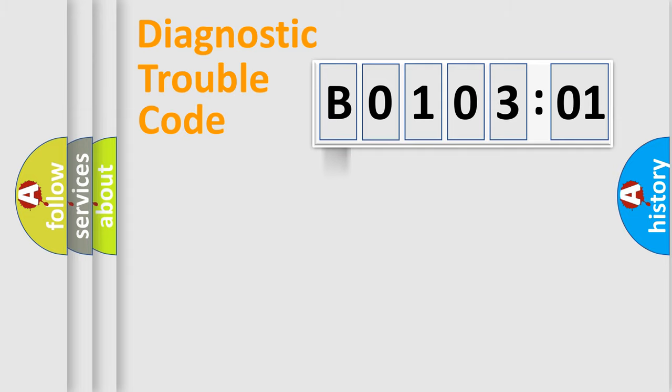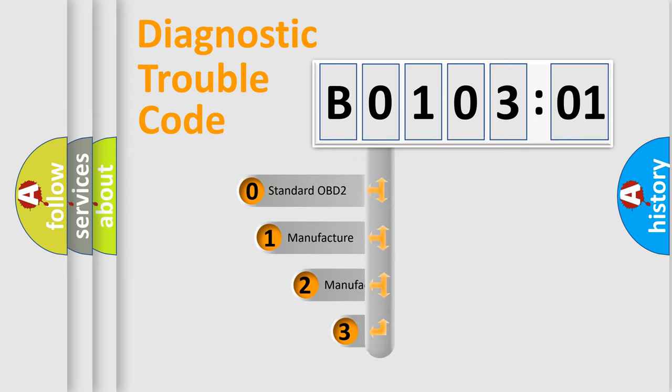Powertrain, body, chassis, network. This distribution is defined in the first character code.